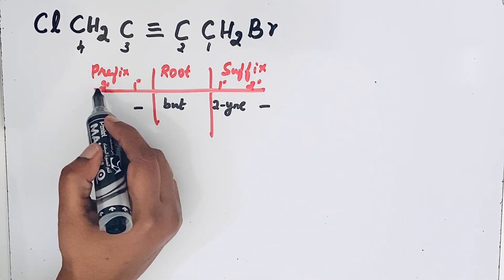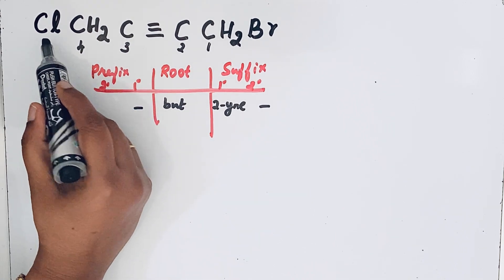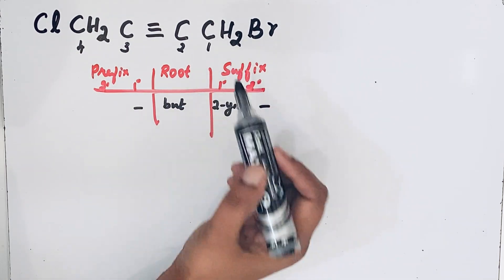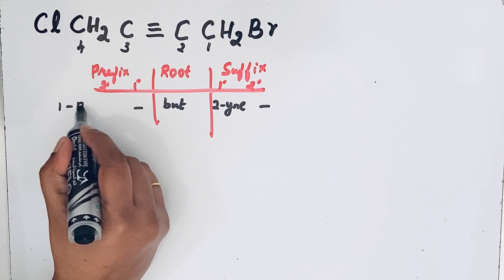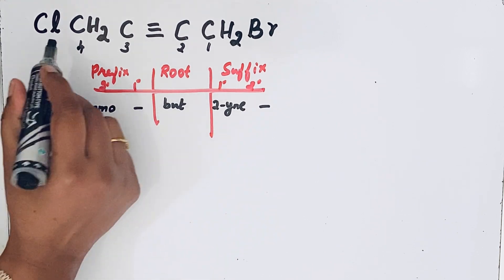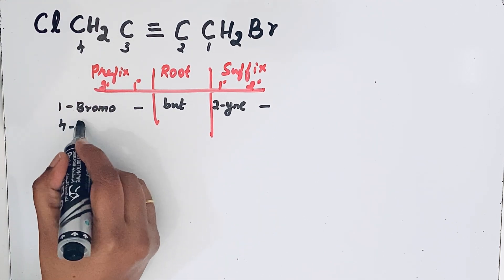For secondary prefix, we have the two substituents. One is Chloro, another one is Bromo. So 1-Bromo, then after that 4-Chloro.